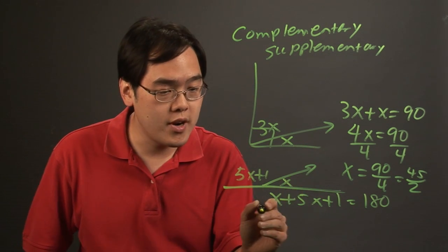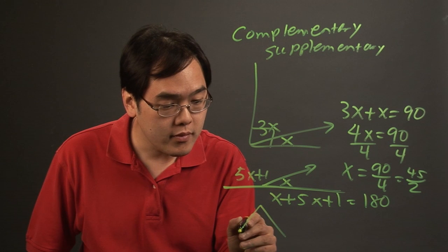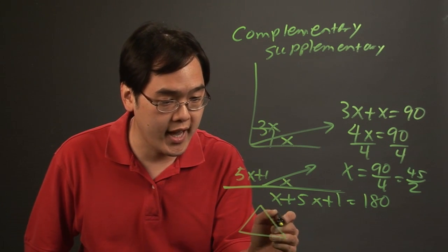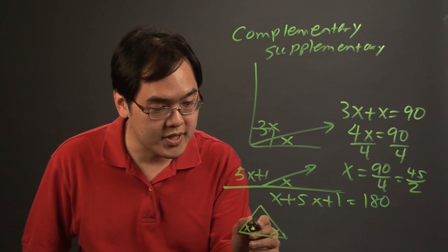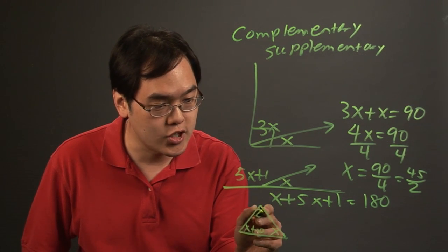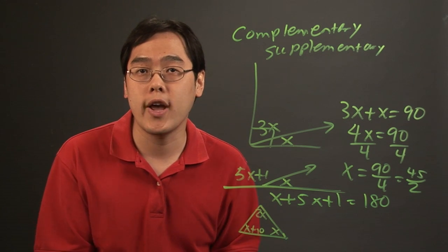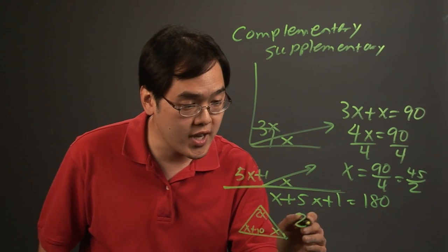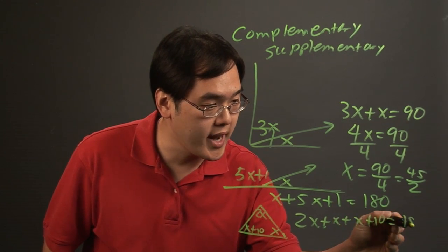Now another scenario perhaps would be in triangles where you might be asked to solve equations involving the angles of a triangle. So if you have let's just say x, x plus 10 and then let's just say 2x just as a hypothetical, what you're doing is because you know all the angles of a triangle add to give you 180, you're setting all these angles together and setting it equal to 180.